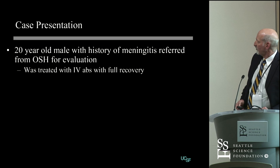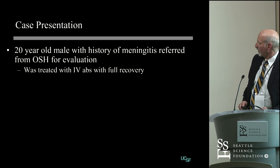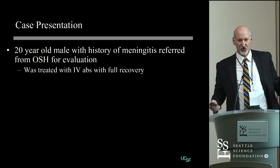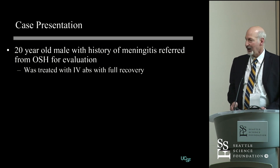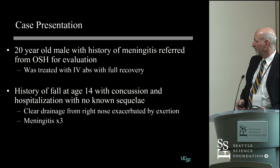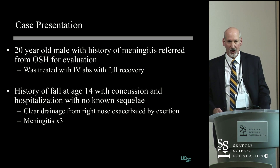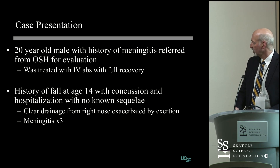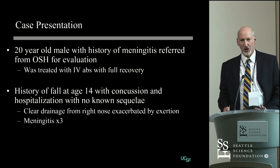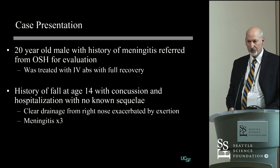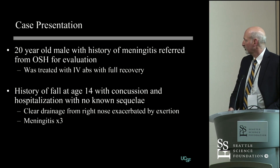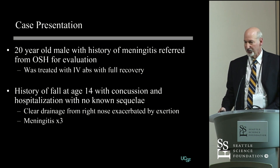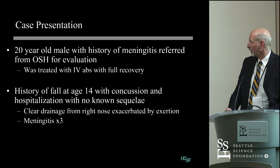This is a 20-year-old male with a history of meningitis, referred from an outside hospital for evaluation. He was treated for this episode of meningitis with IV antibiotics, and he did very well, had a full recovery. In taking a history, the patient had a history of a fall at age 14. He had a concussion and hospitalization that was in Mexico. There were no known sequelae at the time. However, he had had clear drainage from his right nose that was exacerbated by exertion, and he had had three episodes of meningitis — this was his third episode.